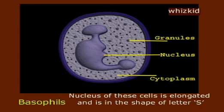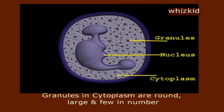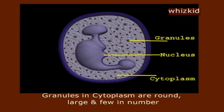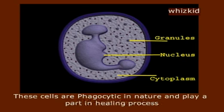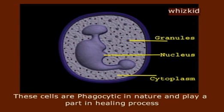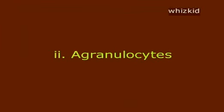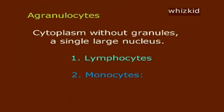Basophils: the nucleus of these cells is elongated and in the shape of the letter S. Granules in the cytoplasm are round, large, and few in number. These cells are phagocytic in nature and play a part in the healing process.